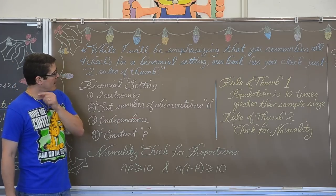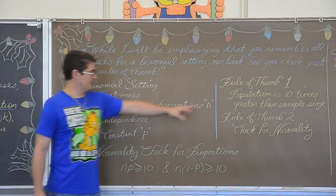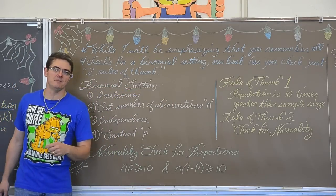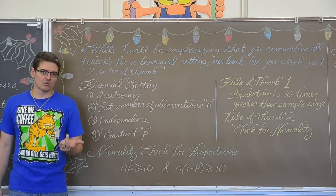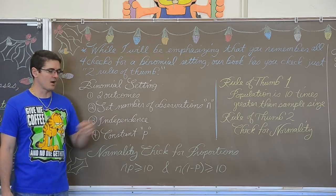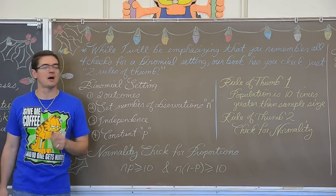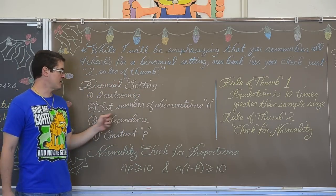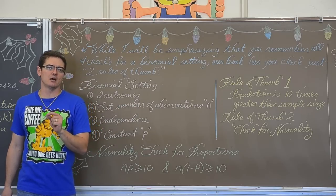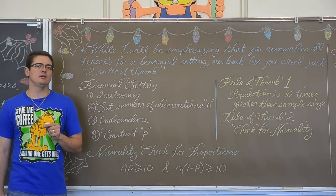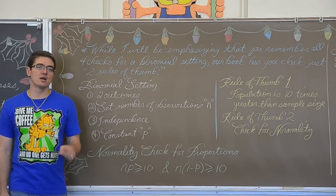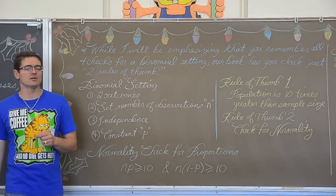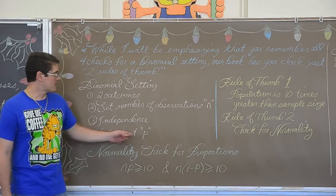Independence. Now I actually pretty much include this first rule of thumb, as my book calls it, in my independence check. A lot of times with independence I will be able to say, well the selection process was an SRS, or assuming that there was an SRS taken, the trials will be independent or the observations will be independent as long as the population is over ten times the sample size. So I normally include this rule of thumb along with the SRS idea with independence. Remember we can only, since this is only intro to statistics, we will only be analyzing data that is collected with an SRS, a simple random sample. Not things like maybe a stratified random sample. That is a good sampling technique, but we do not know how to deal with that kind of data. Not in this class.